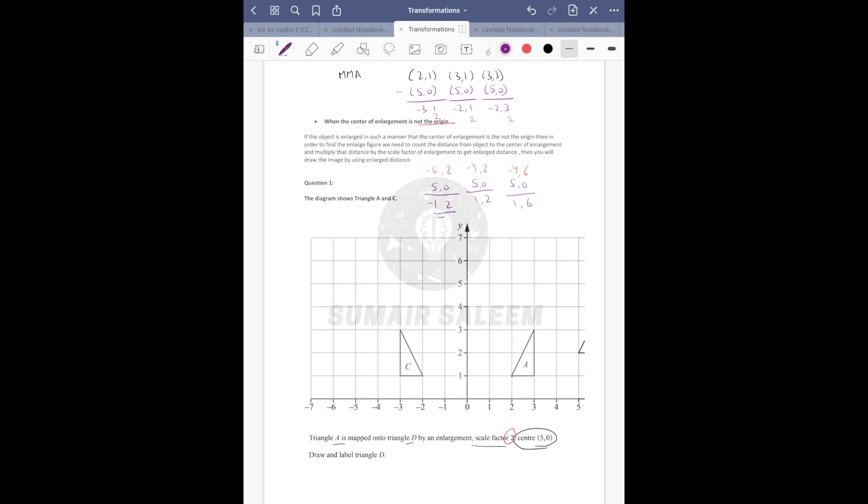2 plus 0 is 2, minus 4 plus 5 is 1, 6 plus 0 is 6 minus 4 is 2. So when center is not at origin, first minus the center, multiply by scale factor, then add the center back. This gives you the image.